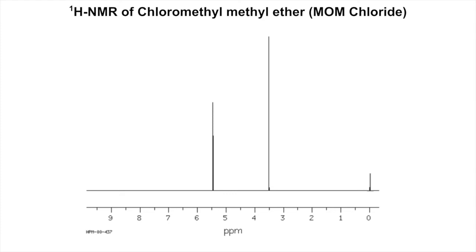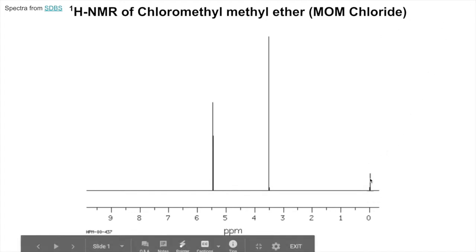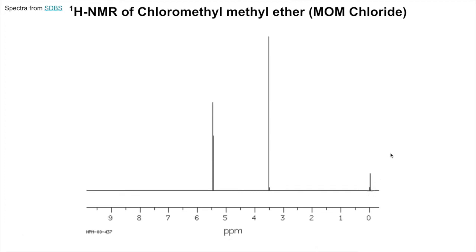First we'll start with an example that has no coupling - still a thing we haven't defined yet. This one has no coupling, from SDBS, and I did add the TMS signal - I doctored it slightly. This was done on a 300 megahertz NMR, which is stronger than our NMR - our NMR is just 60 megahertz.